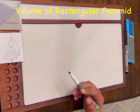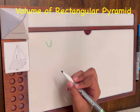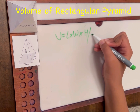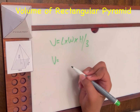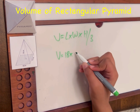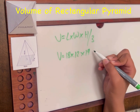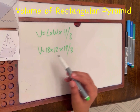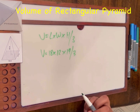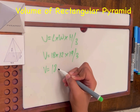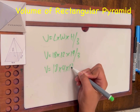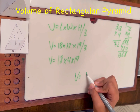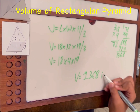Now we're going to do a rectangular pyramid. The equation for finding the volume of a rectangular pyramid is length times width times height divided by 3. In this scenario it would be 18 times 12 times 19 divided by 3. If you find any multiples of 3, such as 12, you can divide that first. So it becomes 18 times 4 times 19, which makes it easier to calculate. The answer is 1368 inches cubed.